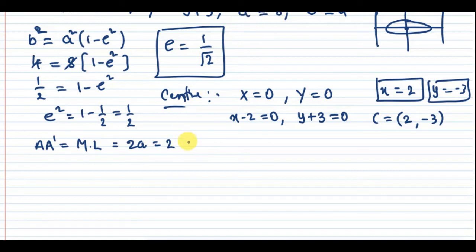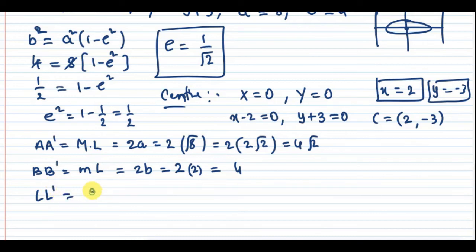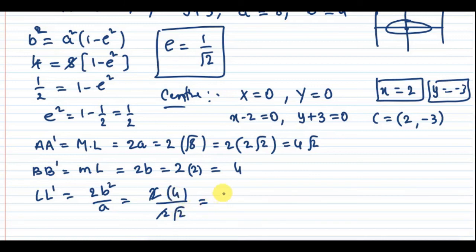Length of the minor axis = 2B. With b² = 4, b = 2, so the length = 2 × 2 = 4. Length of latus rectum = 2b²/a = 2 × 4 / (2√2) = 8 / (2√2) = 4 / √2 = 2√2.